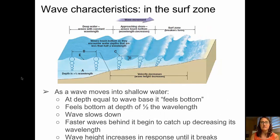In the surf zone, we see a wave approaching the shoreline with that typical circular movement of wave particles decreasing with depth down to the wave base. But as the wave approaches the shore and the wave base feels the bottom, those circles start to become more and more elliptical and tip forward. The waves slow down, wavelength decreases, and wave height increases until the wave becomes unstable and breaks.